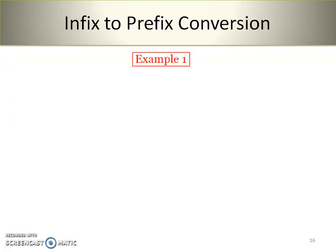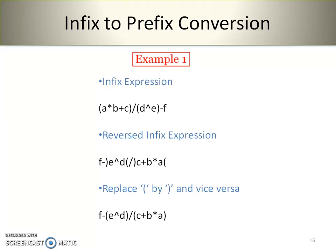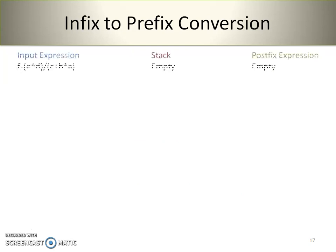Let's look at the first example where an infix expression is given. We find the reverse of the infix expression, then replace all opening brackets with closing and vice versa. The resulting expression is: f - (e ^ d) / (c + b) * a. Now let's start the conversion. Initially, the input expression is scanned, and the stack and postfix expression are empty. F is an operand, so it is copied into the postfix expression.